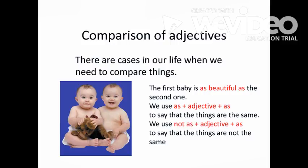There are cases in our life when we need to compare things. The first baby is as beautiful as the second one. We use 'as' plus adjective plus 'as' to show that things are the same. We use 'not as' plus adjective plus 'as' to show that things are not the same.